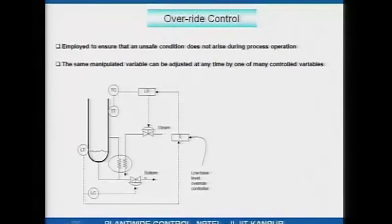For a set of conditions, for example, the steam valve is moved by the level controller. If an unsafe condition develops, the steam valve is controlled by the temperature controller. This is best explained using an example rather than me going on and on.